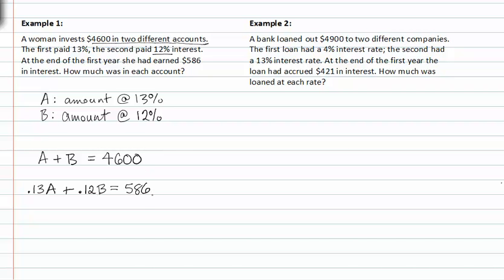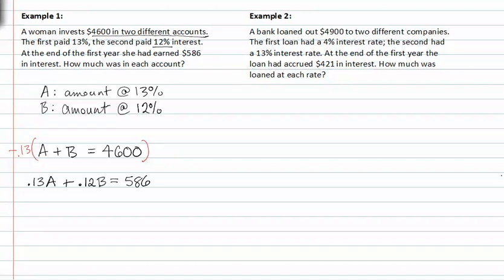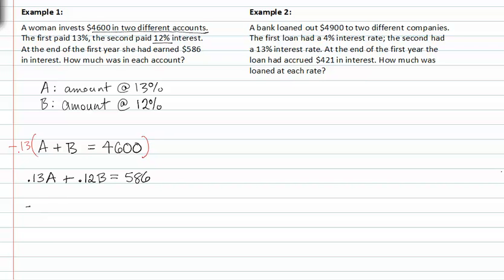Now we have two equations, and we can multiply the first equation by negative 0.13. This will allow our A's to drop out. So rewriting this equals negative 598. That's my first equation. My second equation remains the same: 0.13A plus 0.12B is equal to 586.